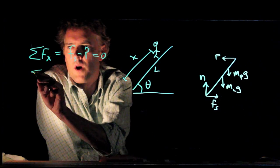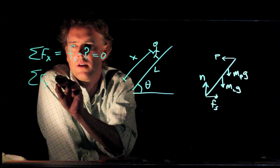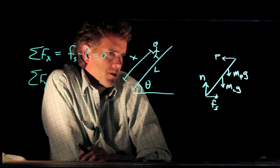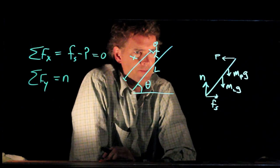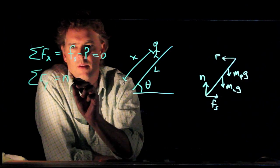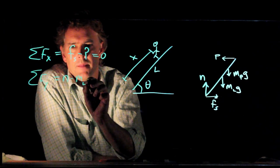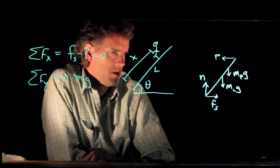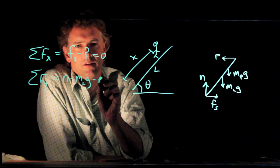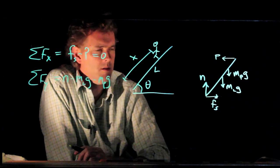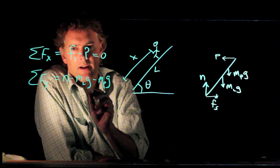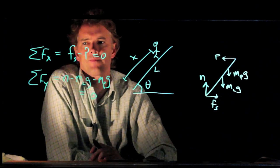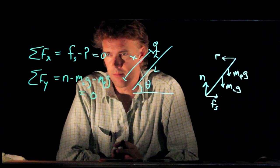What about the forces in the y direction? In the y direction, we have normal force n going up. We have the weight of the ladder, m l g, going down. We have the weight of the person going down. And that is it. All of that has to add up to zero. Alright, so that's the easy part of the problem.